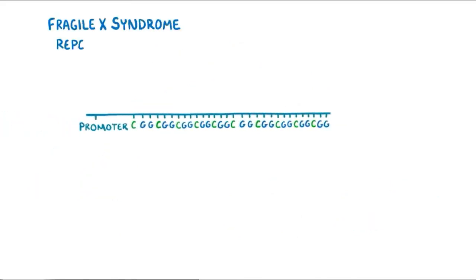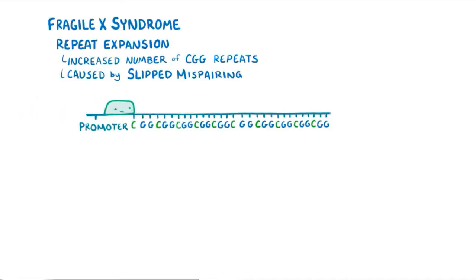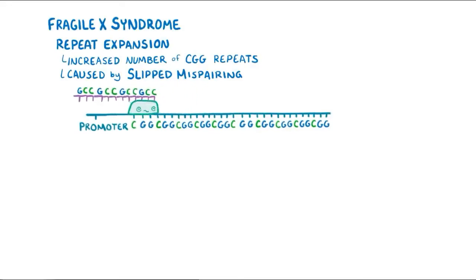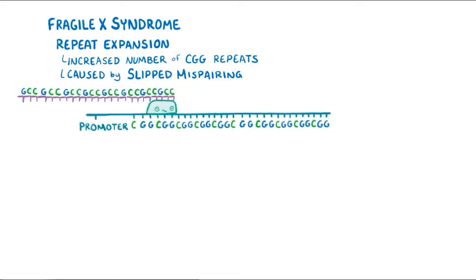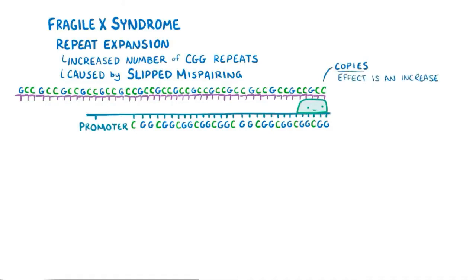In Fragile X syndrome, there's a repeat expansion, meaning there's an increased number of CGG repeats in the gene. This repeat expansion is caused by slipped mispairing, which is where the enzyme DNA polymerase gets confused when copying a repetitive sequence. DNA polymerase loses its place among the FMR1 triplet repeats and goes back to recopy what it already just copied — this is like getting lost in a video and watching the same part over and over. Since DNA polymerase is making copies, the effect is an increase or expansion of the number of repeats.